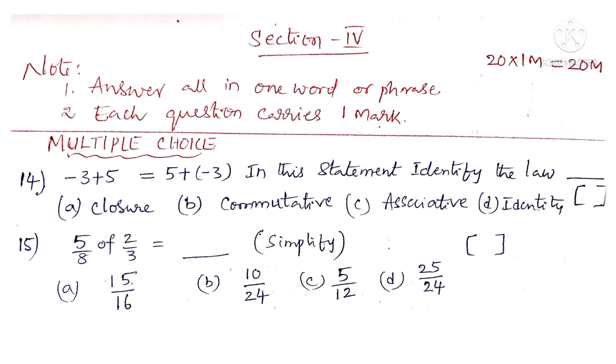Multiple choice 14th question. Minus 3 plus 5 is equal to 5 plus minus 3. In the statement identify the law. Observe that minus 3, 5 on the left hand side are just interchanged 5 and minus 3 on the right hand side. So it is called the commutative property. So the correct choice is B.